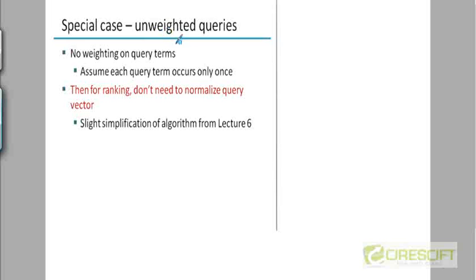I told you that we are looking at a special case where the queries are unweighted. For every term that occurs in the query, the corresponding component in the query vector is just one. We are also assuming that every query term occurs only once in the query.